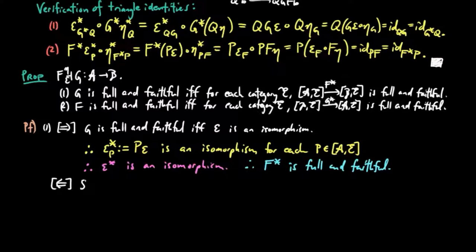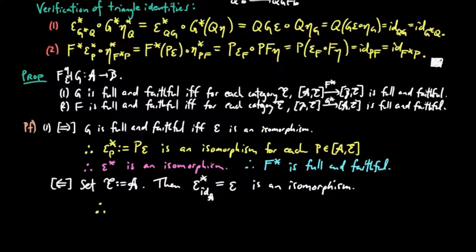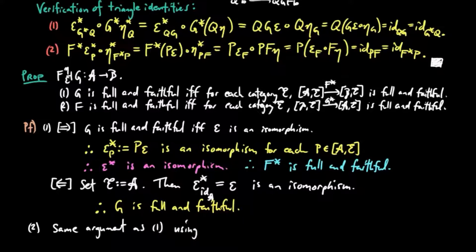Conversely, we set the category E to be the category A. Then ε* on the identity functor on A equals ε, which must be an isomorphism. Therefore G is full and faithful. The second argument is completely analogous, and that completes the proof.